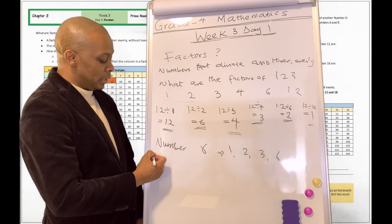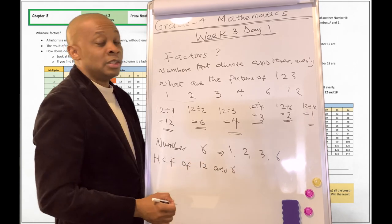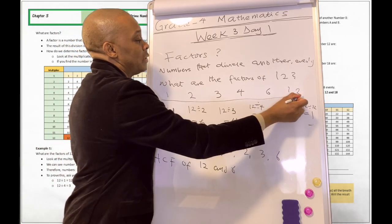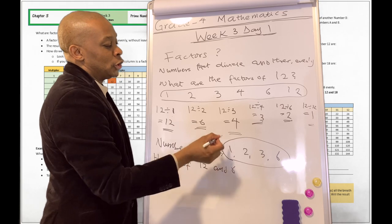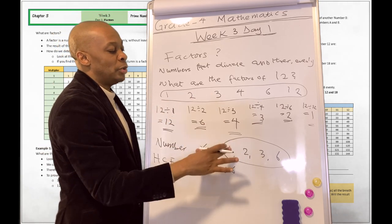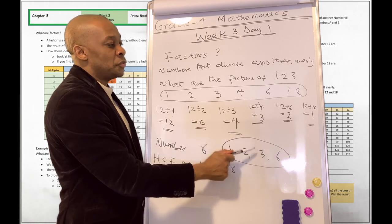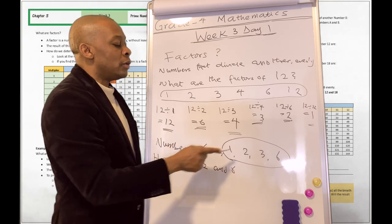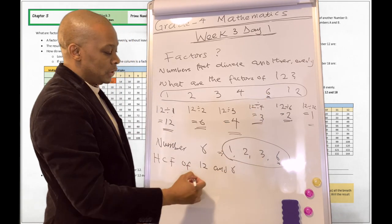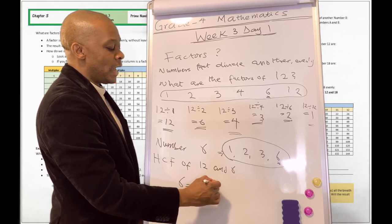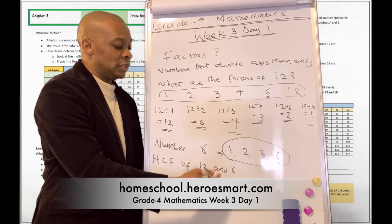They can ask you: what is the highest common factor of 12 and six? Look at the factors of 12 — one, two, three, four, six, twelve — and the factors of six — one, two, three, six. Which factors are common to both? One is common, two is common, three is common, and six is common. The highest of these is six. So six is the HCF, the highest common factor, of 12 and six.